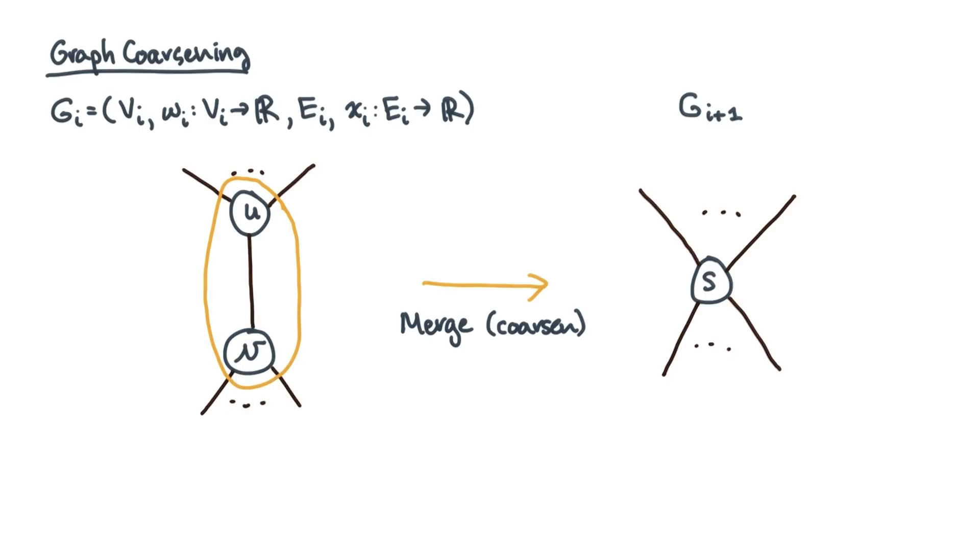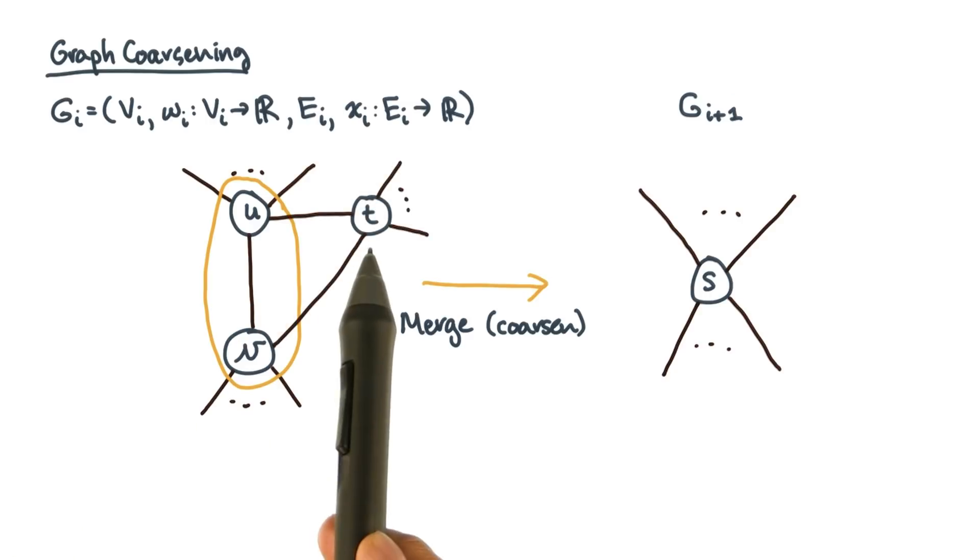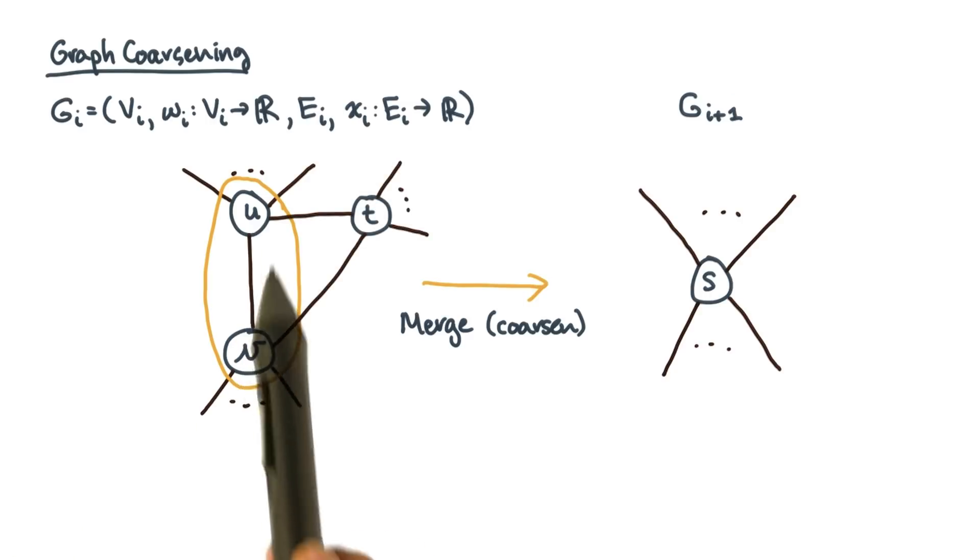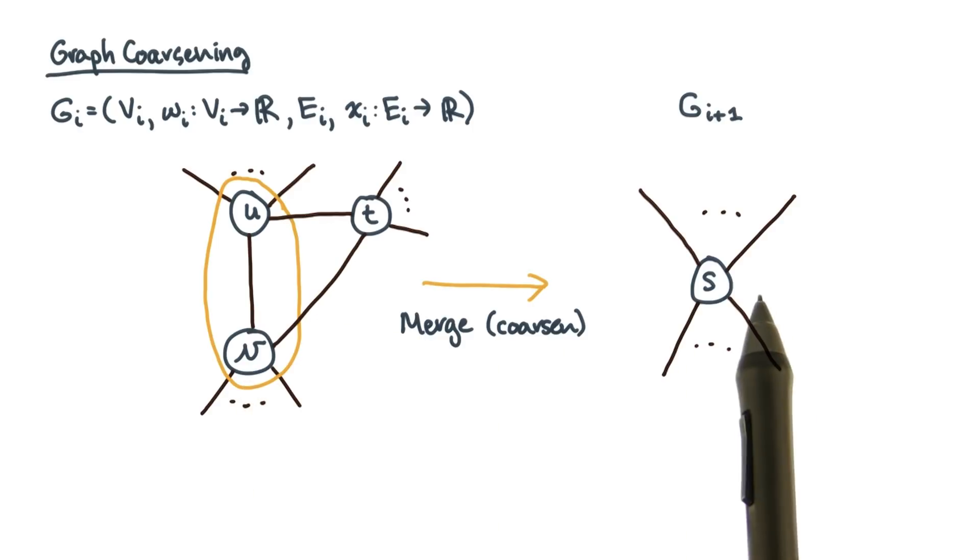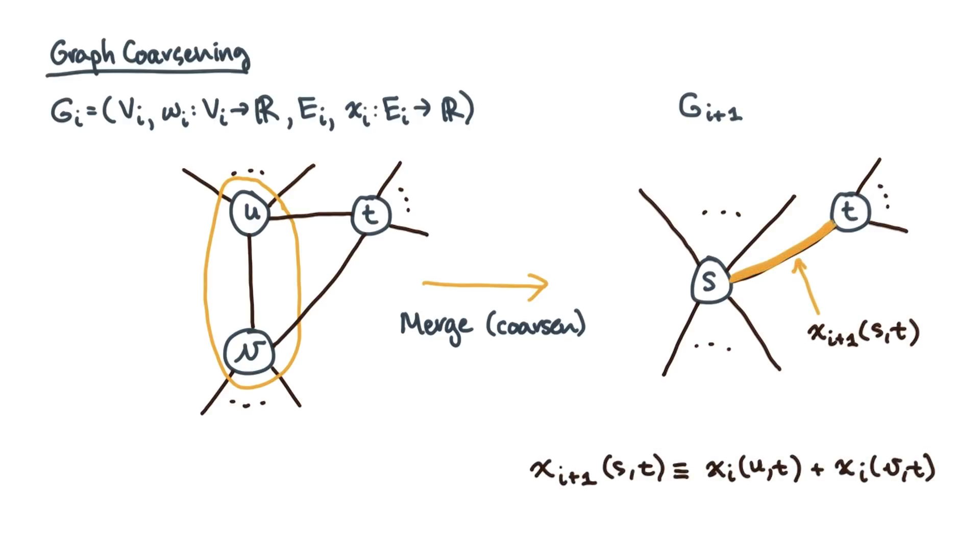The main case to think about is the following. Suppose there's a vertex t that's connected to both u and v. Then these two edges will become a single super edge in the coarsened graph. So what is its weight? A natural idea is simply to sum the weights of the original edges. So the weight of the new edge is just the weight of the two old edges that got merged.